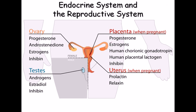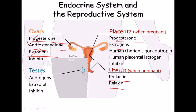In the genital organs, the ovary produces progesterone and estrogen. Estrogen helps develop the major female characteristics, while progesterone is released during pregnancy and throughout the menstrual cycle. The placenta also produces progesterone and estrogen during pregnancy. The uterus produces prolactin and relaxin — during childbirth, relaxin increases to relax the muscles so the baby can move out.